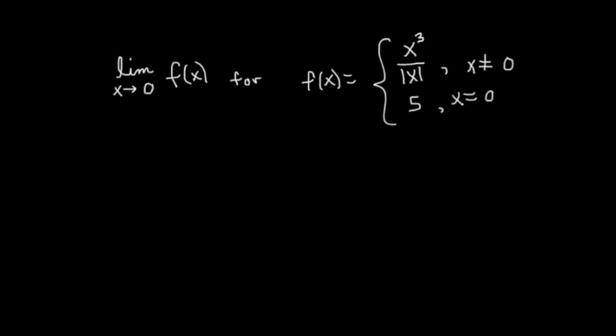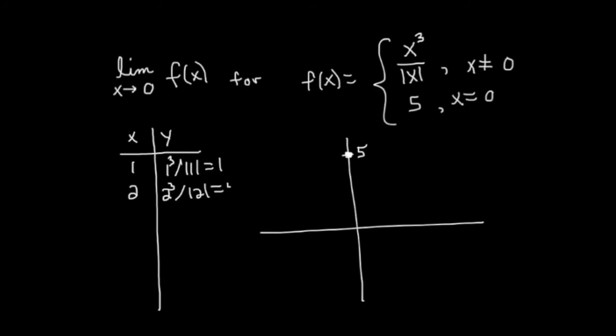Let's try another example. Our goal here is to take the limit as x approaches 0 of this function, where this function has this piecewise definition here. I'm not sure what the graph of this function looks like immediately. The second part here says that the height of the function is 5 if x is equal to 0, and the first part up here applies whenever x is non-zero. So let's plug in some values just for graphing purposes. I get 1 cubed divided by the absolute value of 1, which is 1. Plug in 2, I get 2 cubed divided by the absolute value of 2, which is 4. Each time the denominator cancels with the numerator, and then I'm just left with x squared.